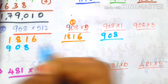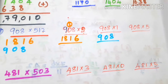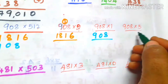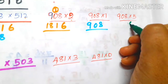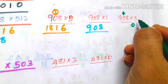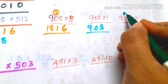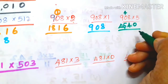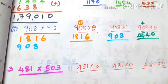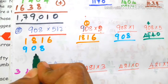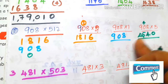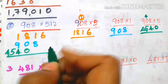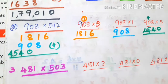So the result is 1816 for 908 × 2. Next, hundreds place — 908 into 5. 5 into 8 is 40, so 0, balance 4. 5 into 0 is 0, plus 4 is 4. 5 into 9 is 45. So this partial product is 4540. Now you need to add the results.